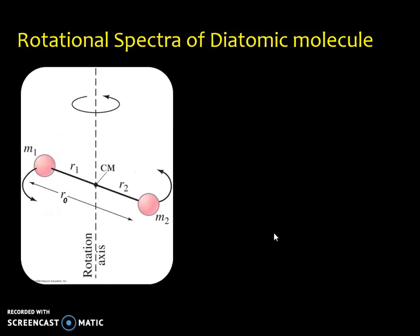Here, we are considering two atoms having masses M1 and M2, which are separated by an equilibrium bond distance R0. The molecule is rotating about an axis passing through the center of mass or center of gravity. And R1 is the distance from the center of mass to the atom M1. R2 is the distance from center of mass to the atom having mass M2.